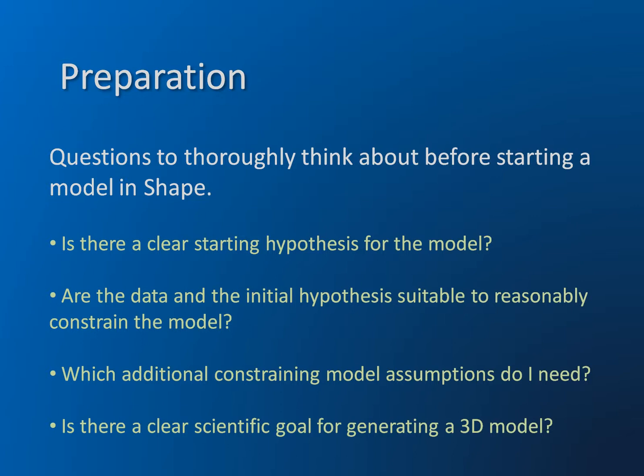An important point is whether the data that you have and the initial hypotheses or model idea are suitably constrained, and whether they constrain your model sufficiently. Can you get new information from it once you make your model, or is it too degenerate to provide any new information at all? So it is very important to think about additional constraining assumptions that your model might provide — say, if there are symmetries or simplifications that might help constrain the model in addition to the data you have.